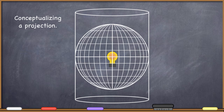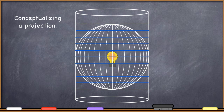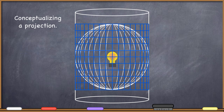I hope you're visualizing this in your mind. There would be shadows cast from all of those black lines on the reference globe that would go from the center outward and cast those shadows onto the developable surface. Then I could take a marker and trace all of those shadows projected onto the cylinder, transferring the information from the reference globe in a systematic way onto the developable surface. Here are the lines of latitude shown in blue as they're projecting out onto the cylinder, and here are the lines of longitude projecting onto the cylinder.